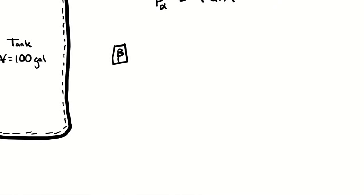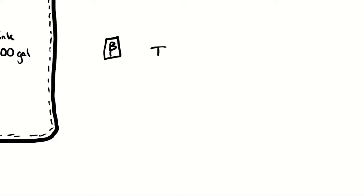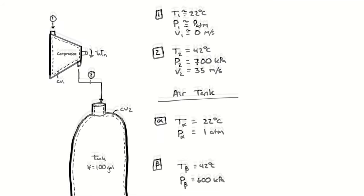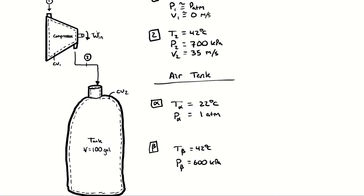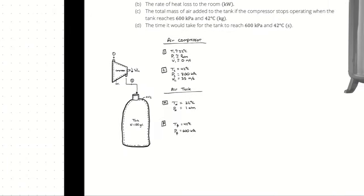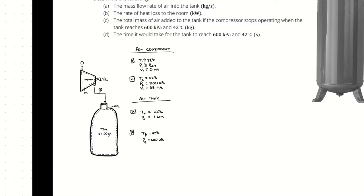At the end of the process, state beta, the temperature and pressure are 42 degrees Celsius and 600 kilopascals. That gives me two independent intensive properties at all four state points. I can use my outlet information to supply an inlet to the tank, and I'll end up with a mass and energy balance on both control volume 1 and control volume 2.